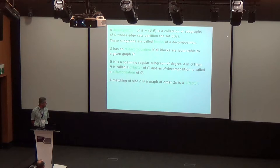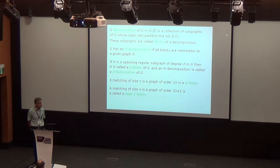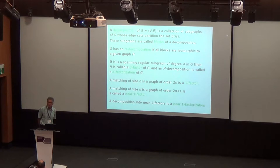When we are talking about decompositions, a matching of the maximum possible size in a graph of even order is a 1-factor. When a graph has odd order and the size of a matching is the maximum possible, then this is a near-1-factor, and the decomposition into near-1-factors is called near-1-factorization. When we talk about decompositions into matchings, we can immediately think about the other elementary topic in graph theory — proper edge coloring.